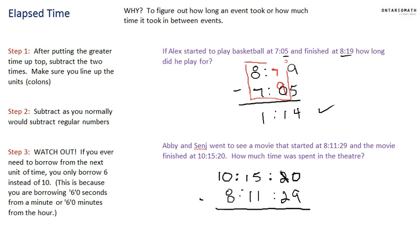0 subtract 9—I can't do it. I'm going to borrow from this; this goes to 1, and I borrow a group of 10 because I'm not going across to the next unit. I'm still borrowing within the seconds, so that's okay. 10 subtract 9 is 1. 1 subtract 2—I can't do it. Now I have to borrow across to the hours.